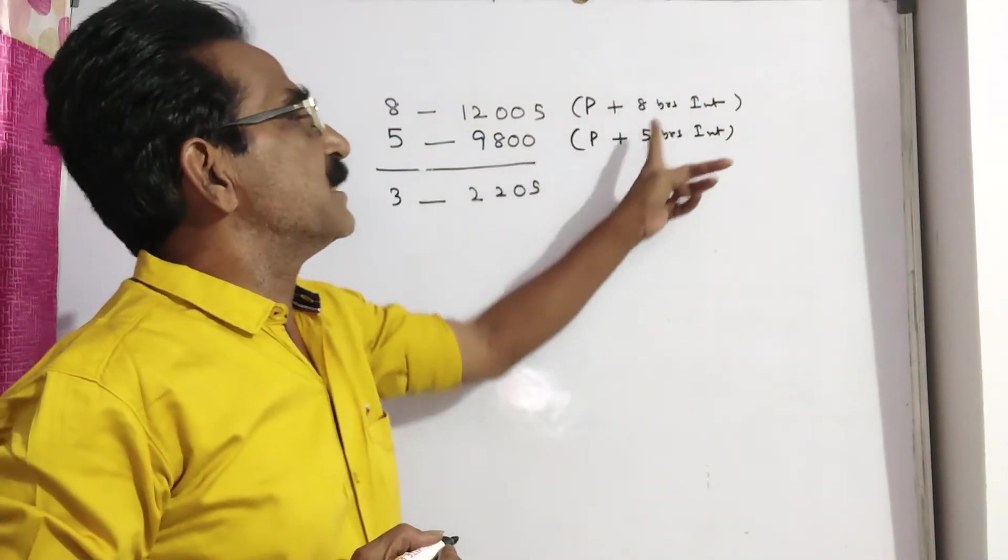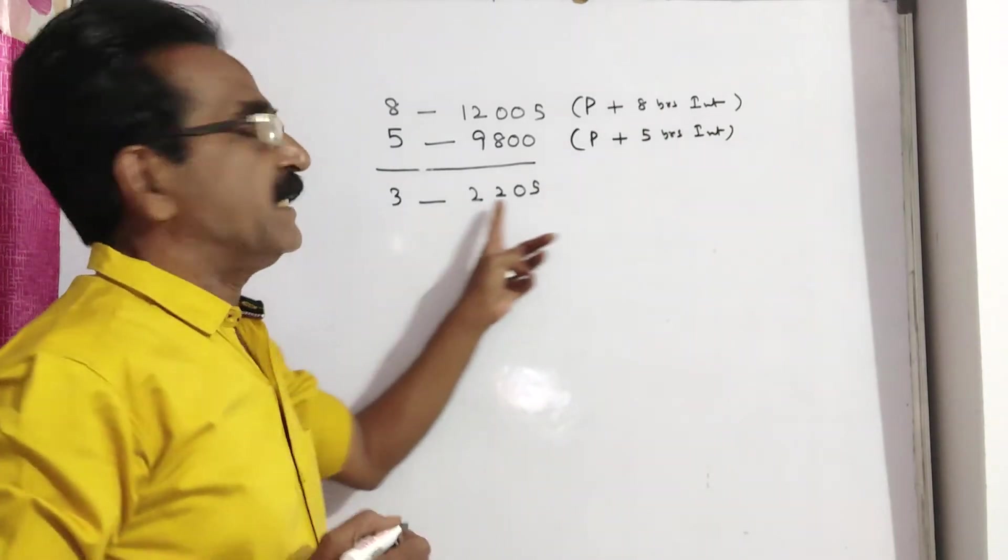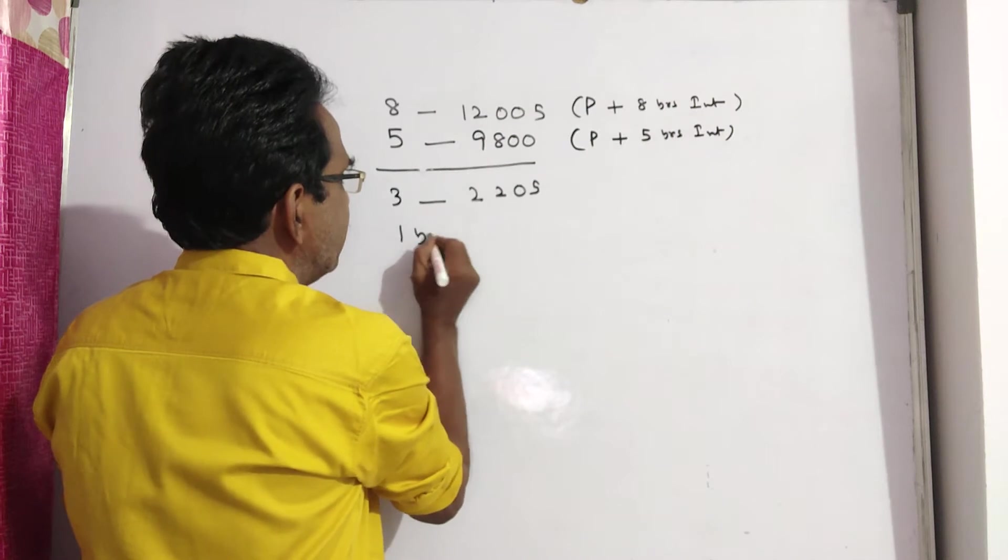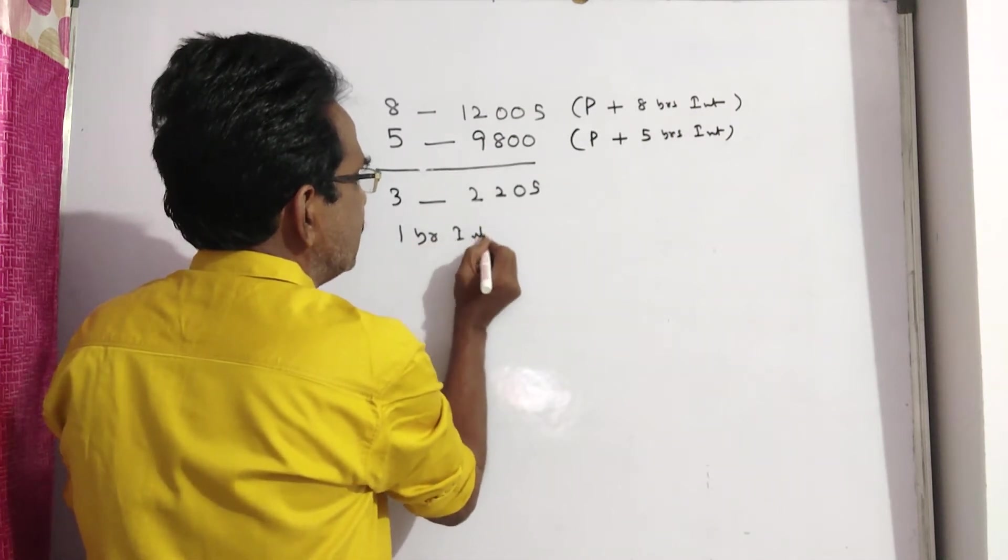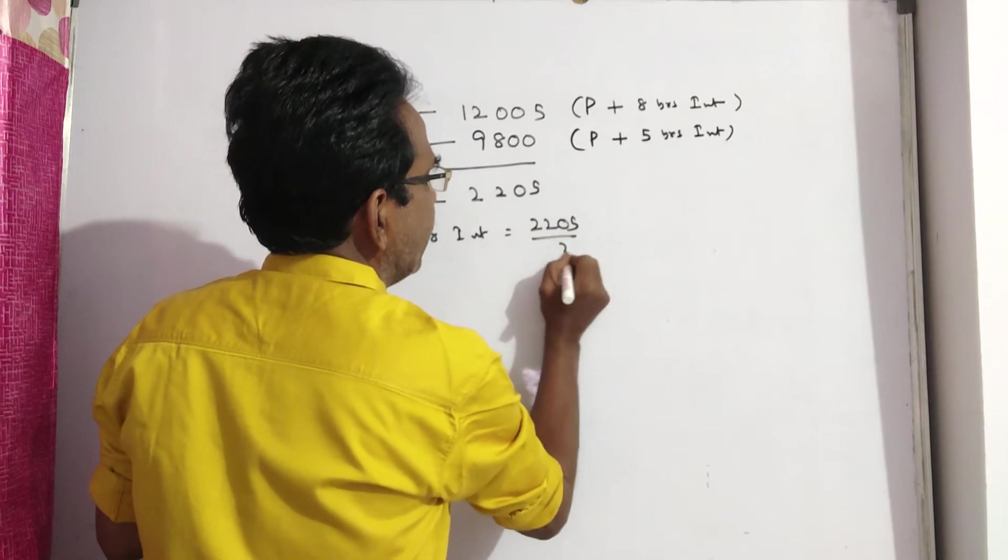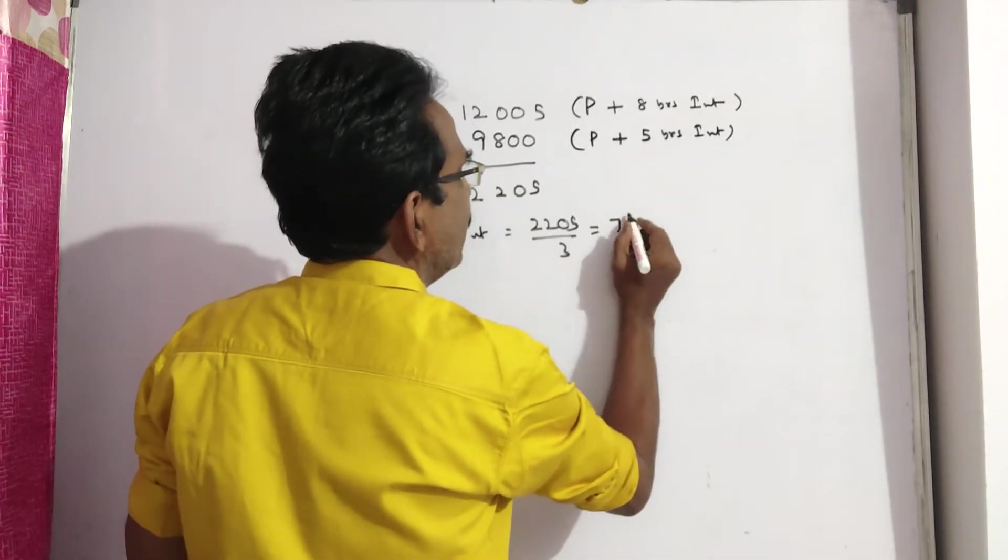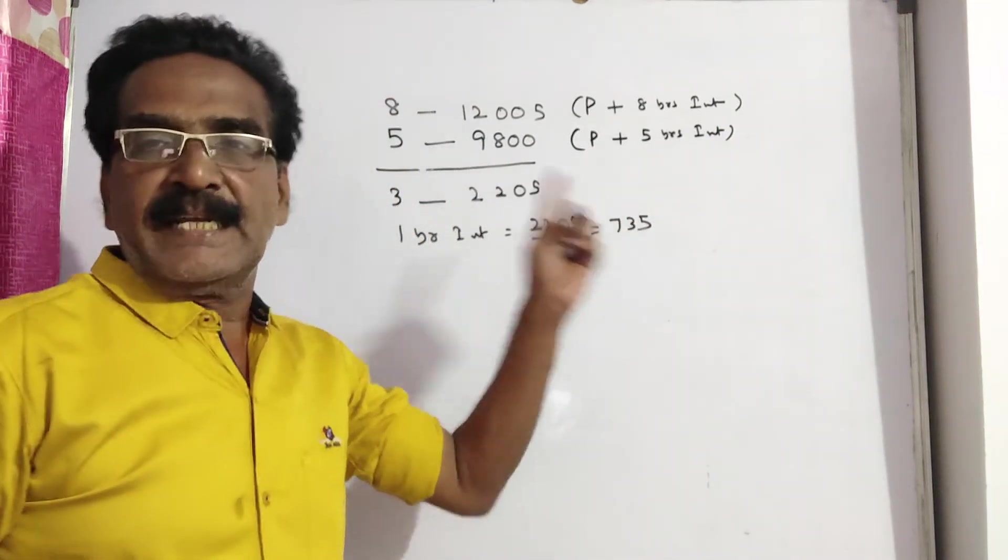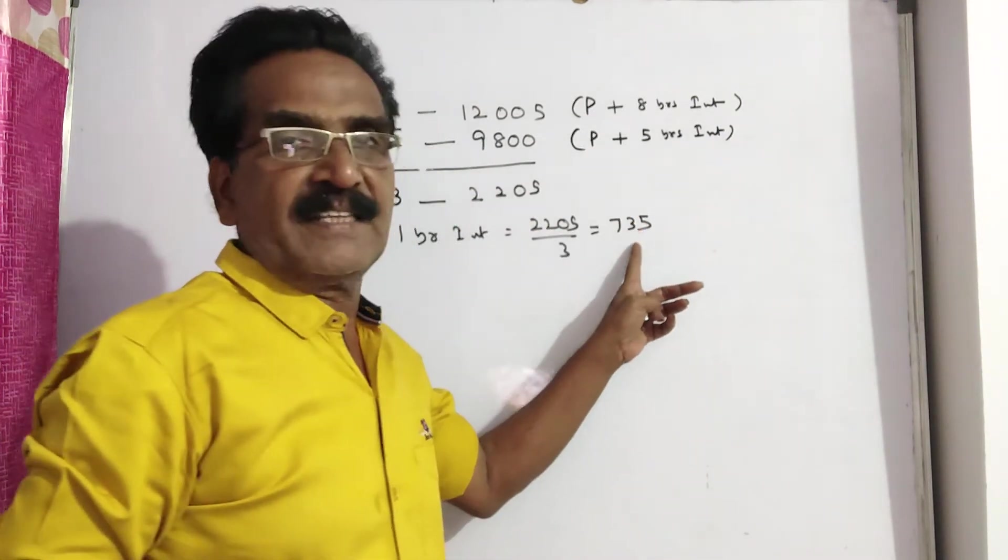So 8 years interest minus 5 years interest, we get 3 years interest. 3 years interest is this much. 1 year interest is equal to 2205 by 3: 3 7's 21, 21, 3 3's and 3 5's. So 1 year interest is 735.